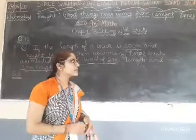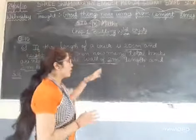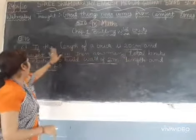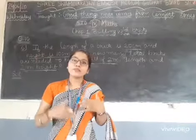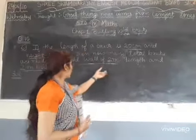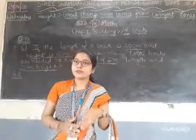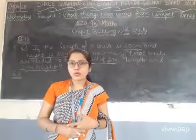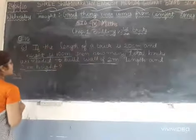Now here it is given that one brick is 20 cm and height is 10 cm. So if we make a wall which is 2 m length and height is given of that wall, then how many bricks will be used? First we will find the area of this brick.